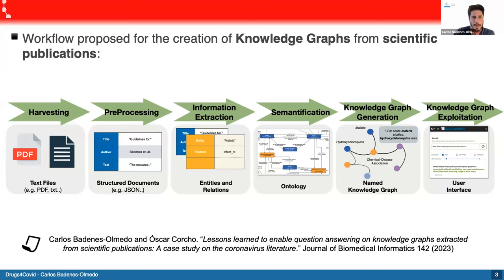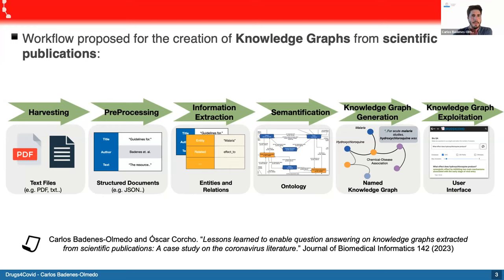In our case, the main elements are the biomedical concepts — for example, drugs, diseases, and genetic information. Then we need to define a formal description of the domain, which is the fourth step: semantification. We need to create an ontology to define the relations between the biomedical concepts and to define all the elements that finally appear in the knowledge graph. The next step is the knowledge graph generation, where we define the rules to create the instances in the knowledge graph. Finally, we can provide the mechanisms to facilitate the use of the information that the knowledge graph contains.